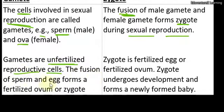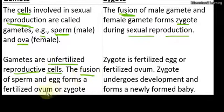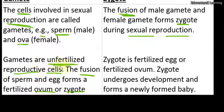The fusion of sperm and egg forms a fertilized ovum or zygote. In dono ka — male gamete aur female gamete ka — milna, fused hona hi — ovum ya zygote create hota hai. Jab tak fertilization nahi hoti hai, yeh dono unfertilized hote hai, alag-alag. Zygote is fertilized egg or fertilized ovum.